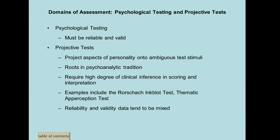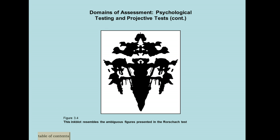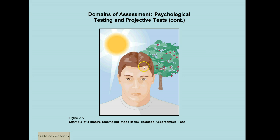Another projective test is the Thematic Apperception Test, or TAT, where you present someone with black-and-white pictures or drawings and they need to tell you a story based on what they see. The story has to have a beginning, middle, and end, and they have to tell you what each character is thinking and feeling. Based on that you look for certain themes. The next slide shows examples — those are not exact Rorschach cards but give an idea of what they look like, and the TAT images are actually in black and white showing a particular scene.